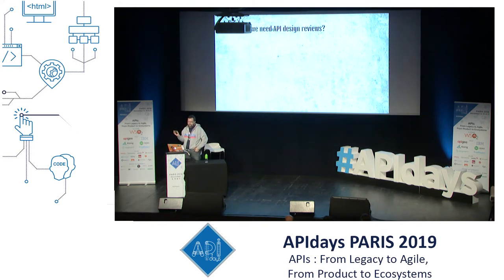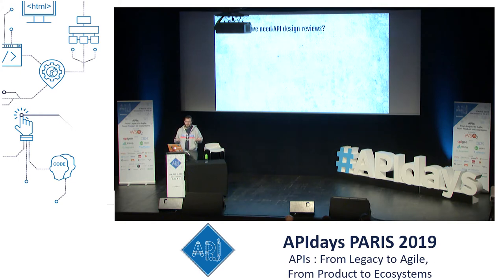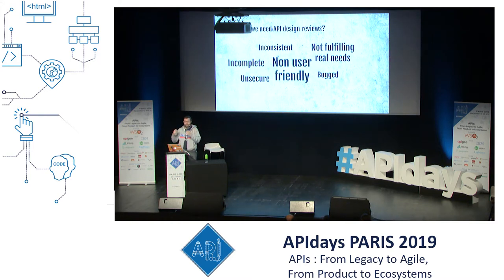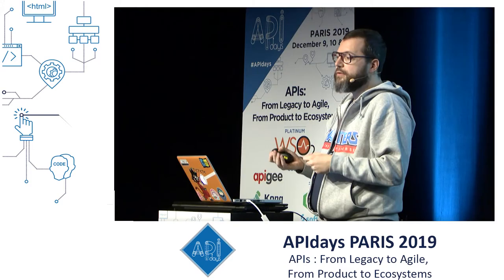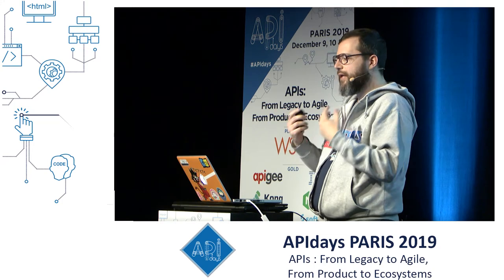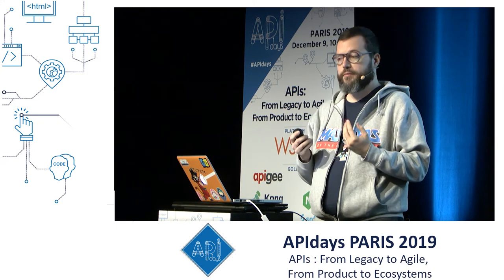This story is a good example of why we need API design reviews. But this is only an example — what else could possibly go wrong when designing APIs? Well, almost everything. API design can be inconsistent, non-conforming to guidelines, bugged, incomplete, non-user-friendly, unsecure, and may even not fulfill the real needs. These are the most common reasons why we need API design reviews. And API design reviewers aim to help designers avoid all these problems.